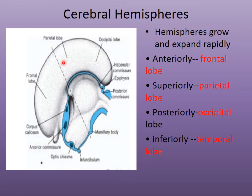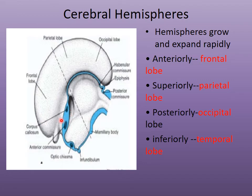Anteriorly they form the frontal lobe, superiorly the parietal lobe, posteriorly the occipital lobe, and inferiorly the temporal lobe. These lobes are formed because of the rapid expansion of the cerebral hemispheres laterally and superiorly.